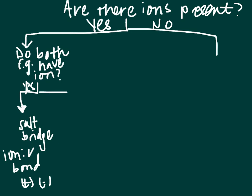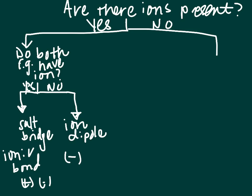If the answer is no — meaning one functional group has a formal charge and the other does not — then you have an ion-dipole. This interaction is between a functional group that has a full charge, which could be positive or negative, and a dipole that has a partial charge. For example, a full negative charge with a partial positive, or a full positive charge with a partial negative — opposite charges attract.